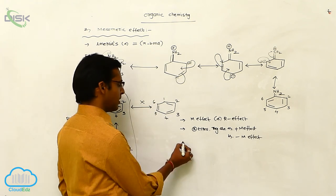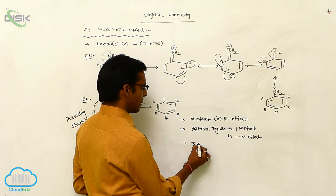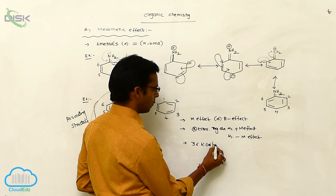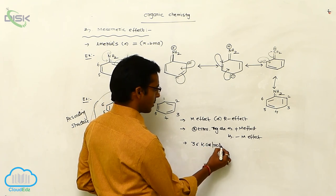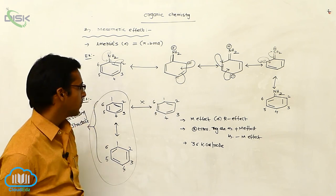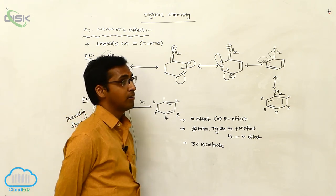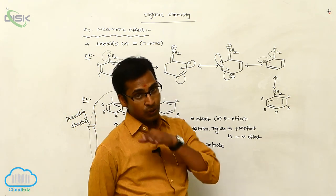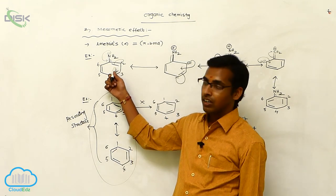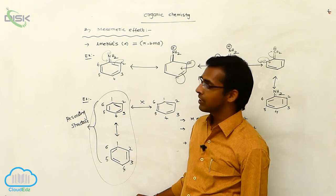The resonance energy of benzene is generally 36 kilocalories per mole. This resonating energy is also obtained during the shifting of pi bonds. This is the mesomeric effect.